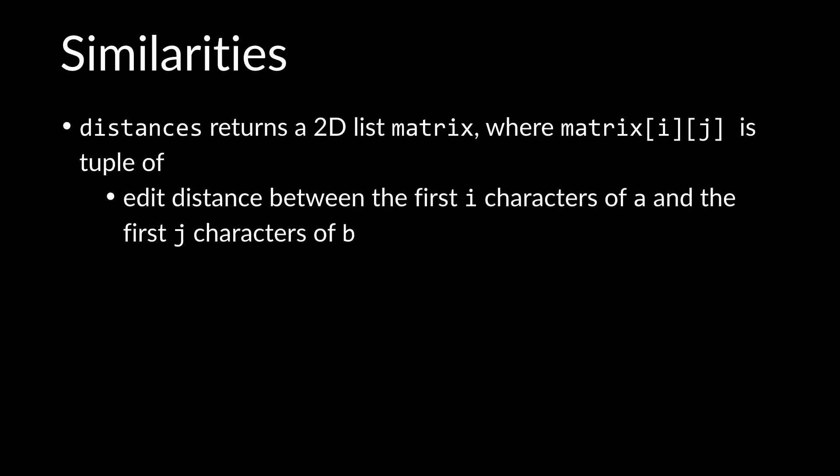And so that edit distance is just going to be a number representing the number of steps it would take to convert from the first i characters of a into the first j characters of b. Then the second element in the tuple is going to be the last operation that you had to take in the optimal sequence of operations to get from one string to the other. That operation might be an insert or a deletion or a substitution, but more on that in a moment.